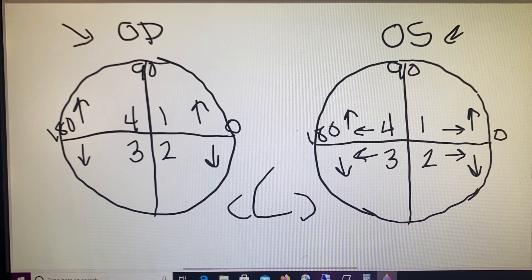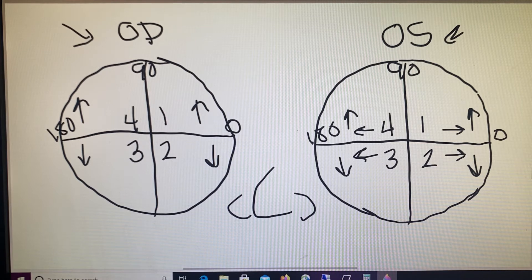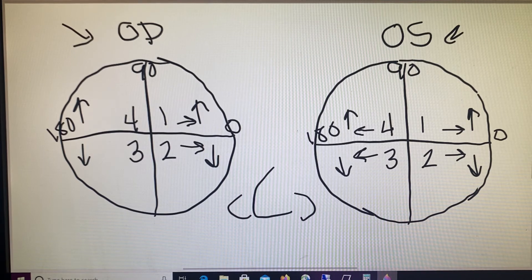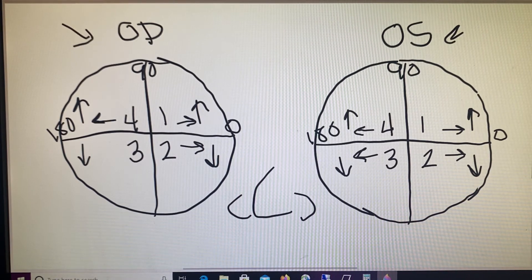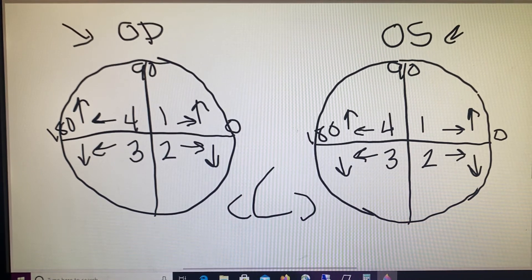Now on the right side, our quadrants one and two are the in quadrants pointing in towards the nose, and then quadrants four and three are base out.